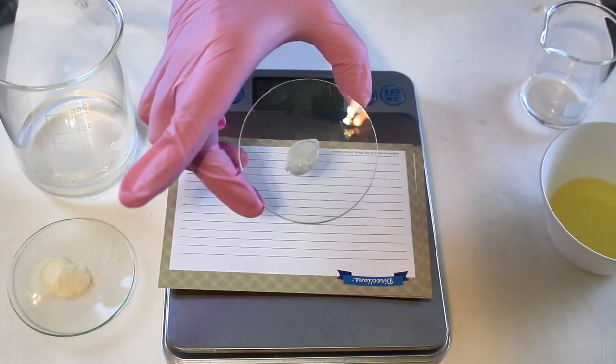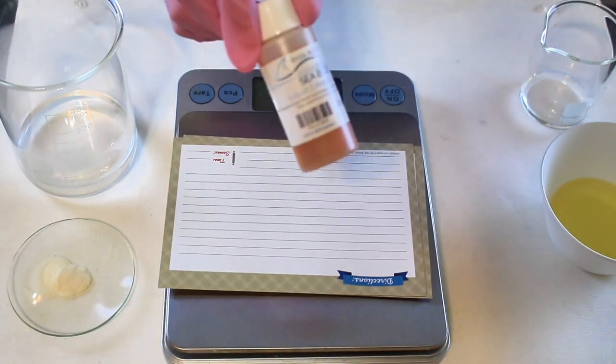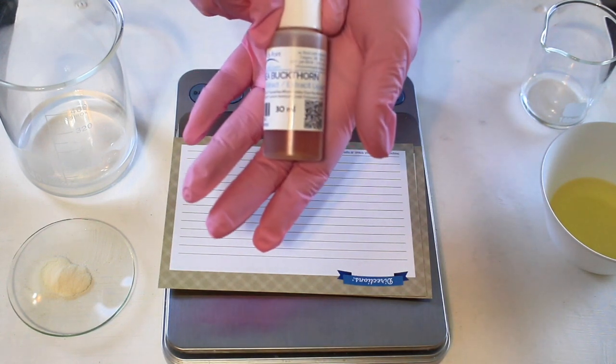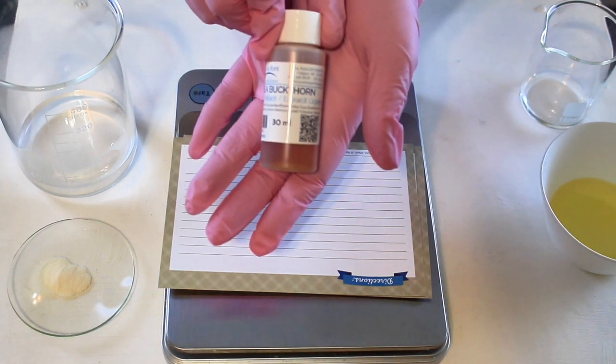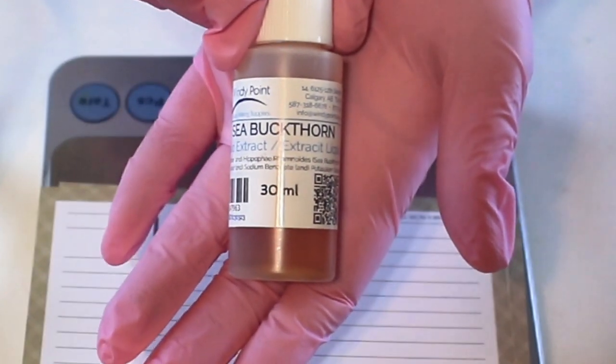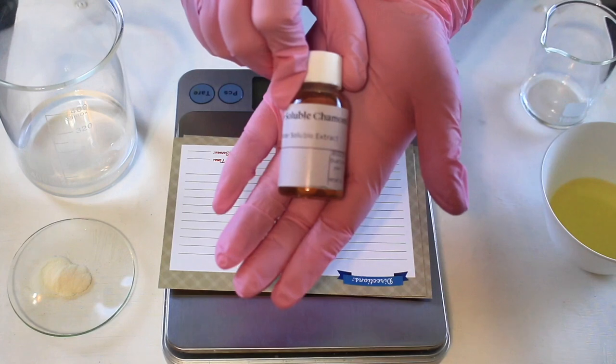This is cocoa glucoside and glyceryl oleate. We'll also be using sea buckthorn extract—this is an anti-inflammatory, anti-irritant to soothe irritated skin and a conditioning ingredient to soften and smooth the skin.